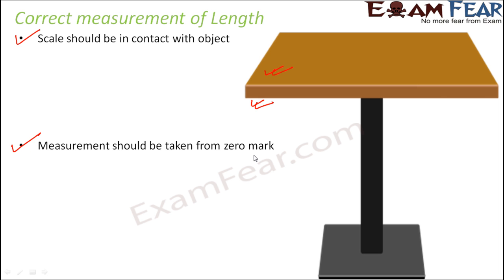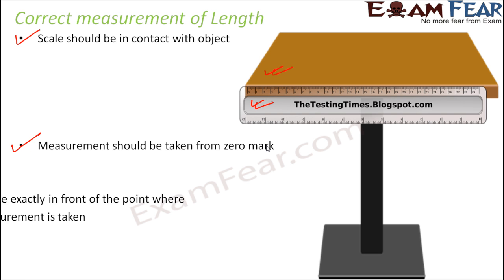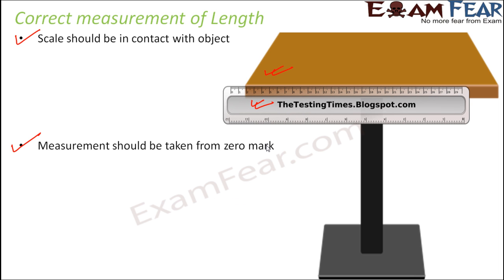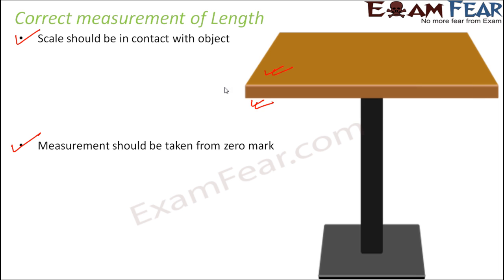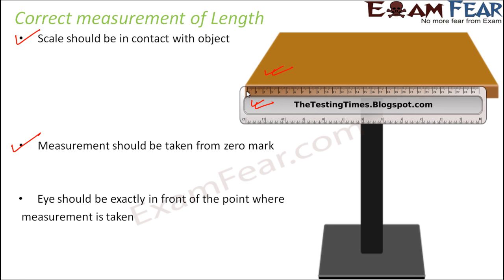The next important thing is that measurement should be taken from the zero mark. When you observe a scale precisely, you will see markings like 0, 1, 2, 3, 4 and so on. It is very important that you start taking the measurement from the zero mark. If the scale is placed such that the length starts from 2, you will end up taking a wrong measurement. The scale should always be placed so that zero starts at the beginning of the object — correct placement of the zero mark is very important.